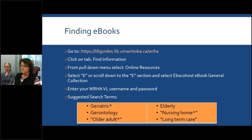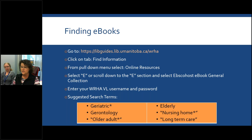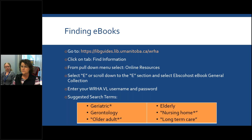For finding eBooks, you use that same URL. You go to it, click on the find information tab, and from the pull-down menu select online resources. At that point, you can use the alphabetical listing and click on E to jump down to that section, or simply scroll down. In this case, we're going to select the EBSCO eBook General Collection. At this point, you'll have to enter your WRHA virtual library username and password since you're going into one of our licensed resources. Here are some suggested search terms.